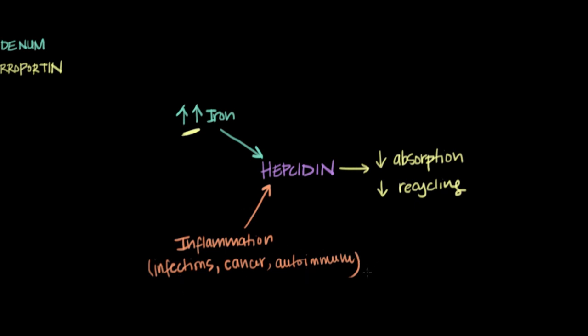These are three of the most common causes of inflammation, but really several other disorders could lead to the same response. When there's any source of inflammation in the body, the body releases cytokines, or small signaling molecules. These cytokines cause an increase in hepcidin production. The hepcidin then decreases absorption and recycling of iron, leading to decreased serum iron, which leads to decreased hemoglobin production, and that decrease in hemoglobin production causes the anemia.